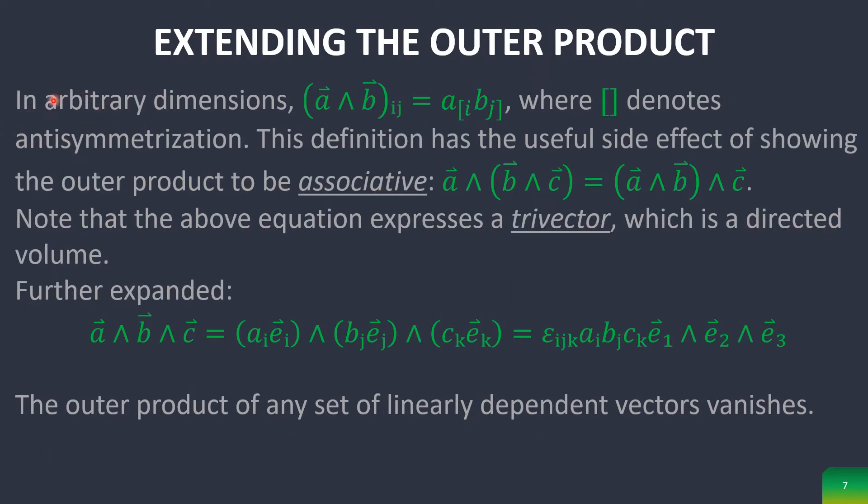Now we can extend it out into arbitrary dimensions using this. So in an arbitrary dimension, this is the representation of these two products, where this denotes anti-symmetrization. Which, if you don't exactly understand that, think about why the pseudo-tensor, the Levi-Civita symbol comes up in this. And that is, if these two vector components are multiplied in an anti-cyclic permutation, then it becomes negative, which explains why we have the slight oddity in the middle of the three-dimensional outer product, which was in the last slide.